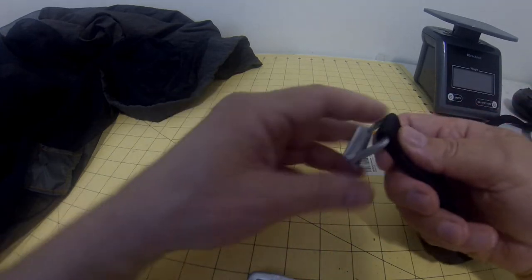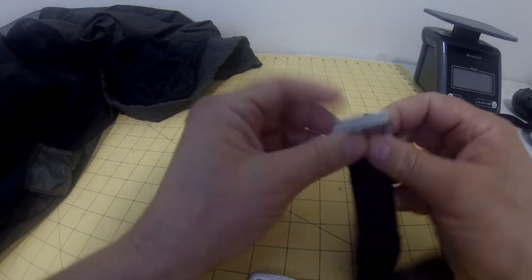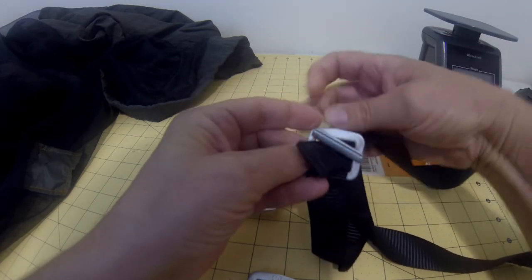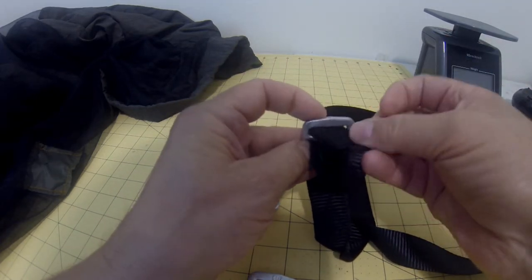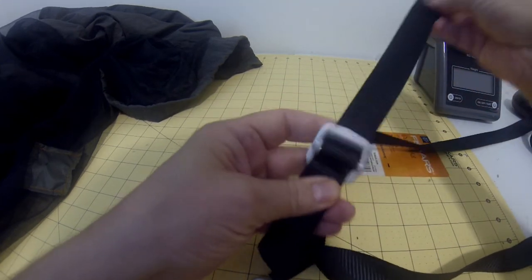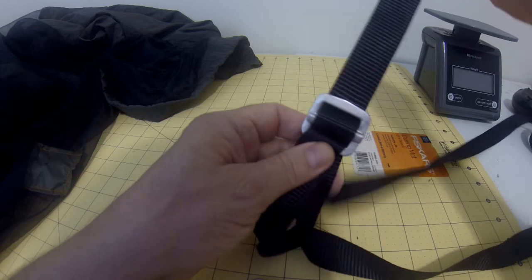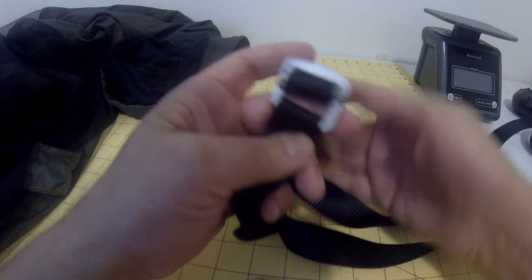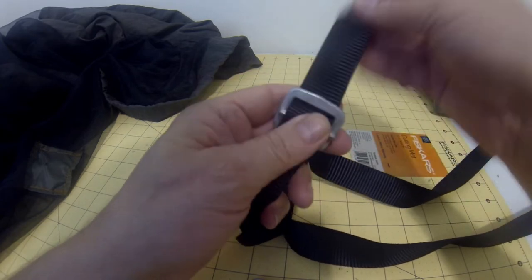What a cinch buckle does is when it's attached to the end of a strap, it lets you take the end of another strap and just run it through and pull it tight, just like a belt.